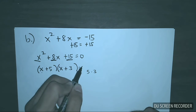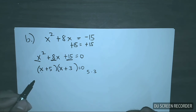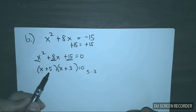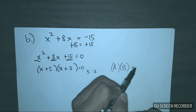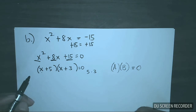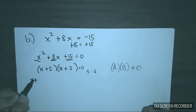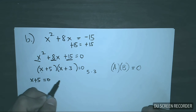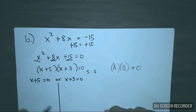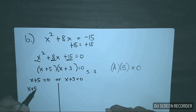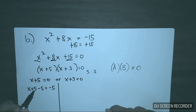Now applying the zero product property. In zero product property, when you multiply a and b and the answer is zero, either a or b must equal zero. So we equate each factor to zero: x plus 5 is equal to 0, or x plus 3 is equal to 0. To solve the first equation, x plus 5 minus 5 is equal to negative 5, giving x is equal to negative 5.